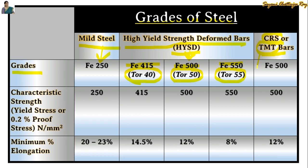Now we will see the characteristic strength of steel for different grades. For mild steel (Fe 250), the characteristic strength is 250 N/mm². For HYSD bar Fe 415, it is 415 N/mm². For Fe 500, it is 500 N/mm². For Fe 550, it is 550 N/mm². And for CRS or TMT bar (Fe 500), it is also 500 N/mm².